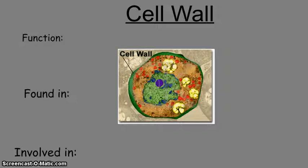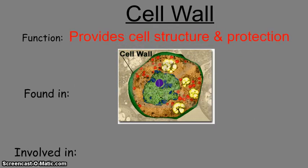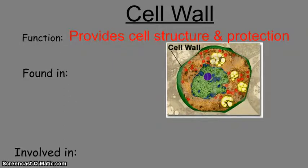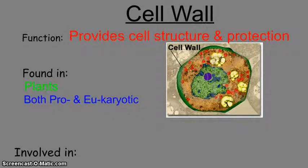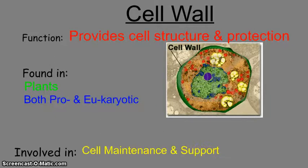The cell wall is a really thick boundary between the cell and its environment, with the cell membrane right up next to it. It provides extra structure and protection, is very rigid, and protects against the effects of gravity. It is found in plants only among eukaryotes, and is also found in many prokaryotes. It is involved in cell maintenance and support.